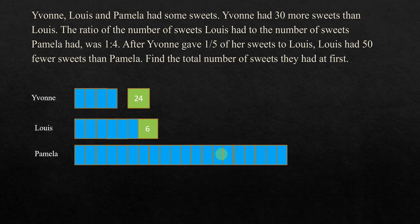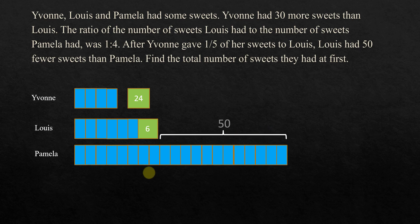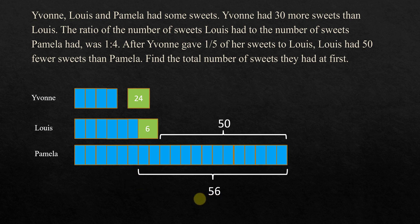Four times five is 20 units. After Yvonne gave one-fifth of her sweets to Louis, Louis had 50 fewer sweets than Pamela. This means the difference here should be 50. We also know that this portion is equal to 56 because it includes the 6. The size is arbitrarily placed here, so don't worry about whether 6 comes up to exactly this point.